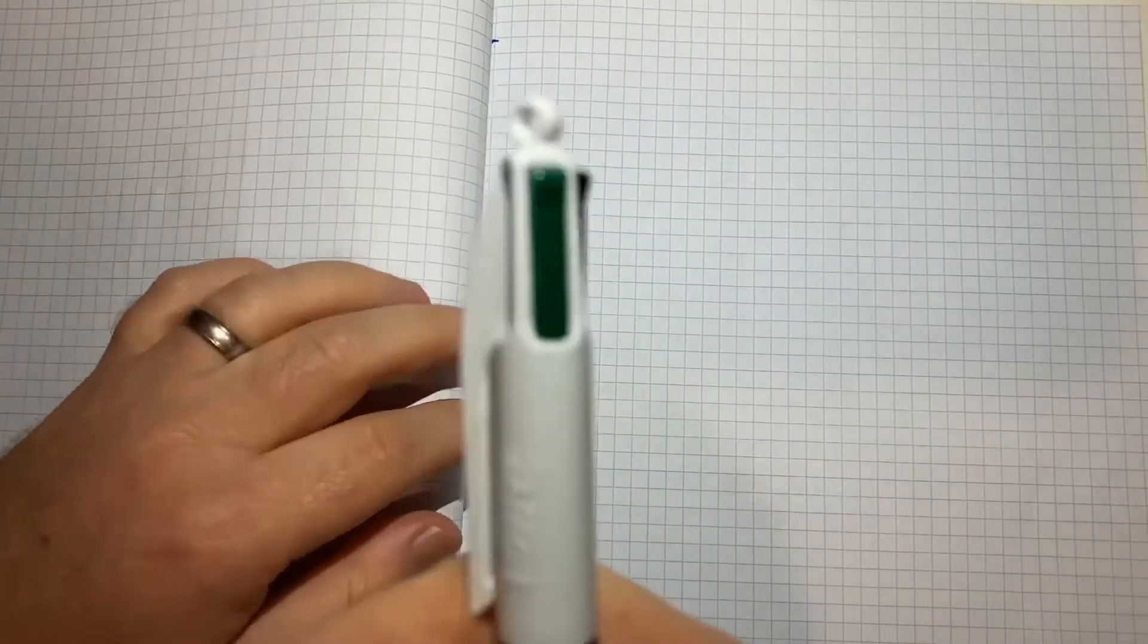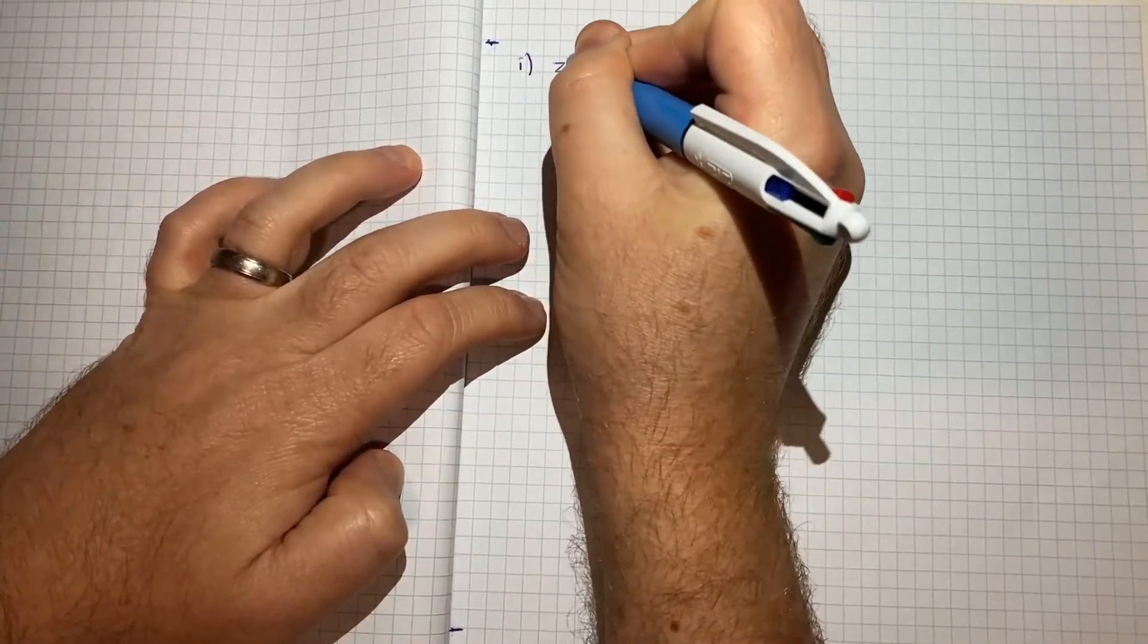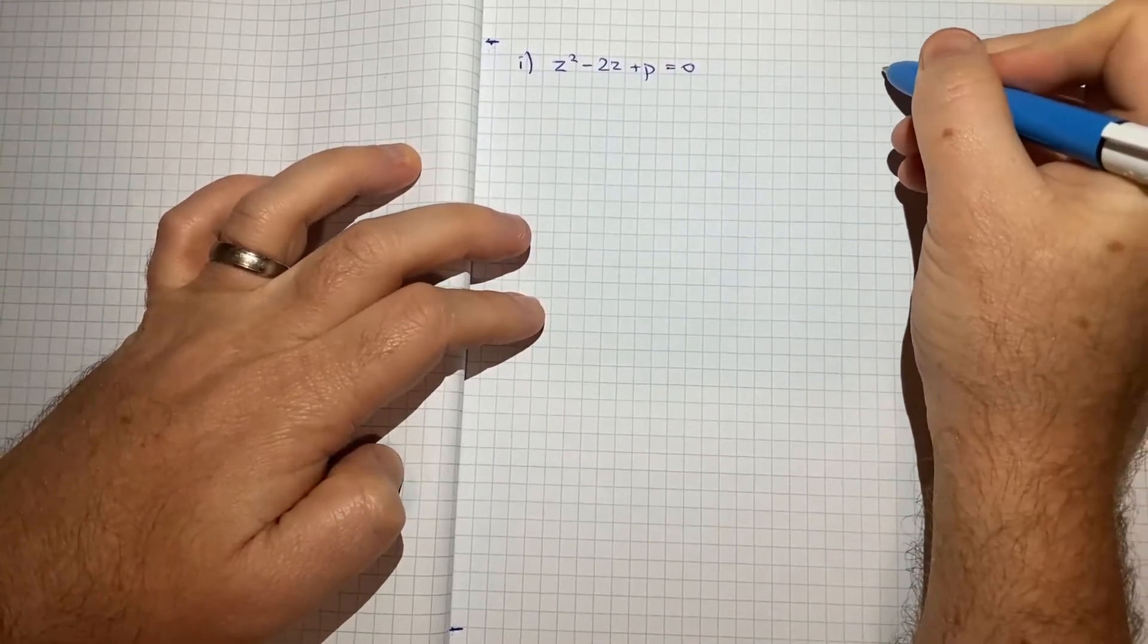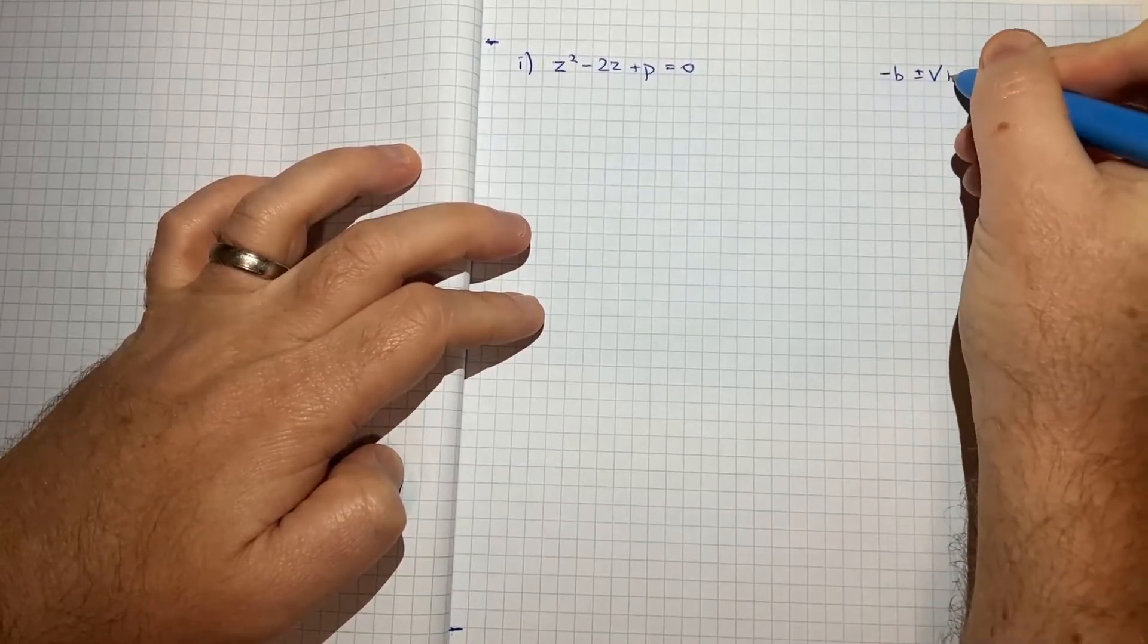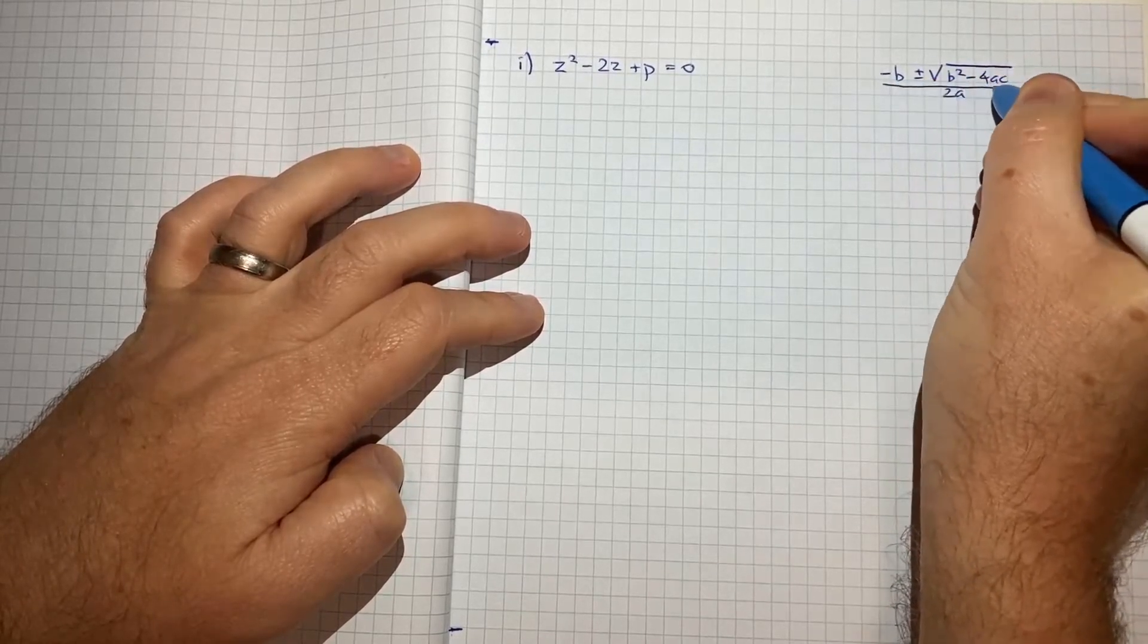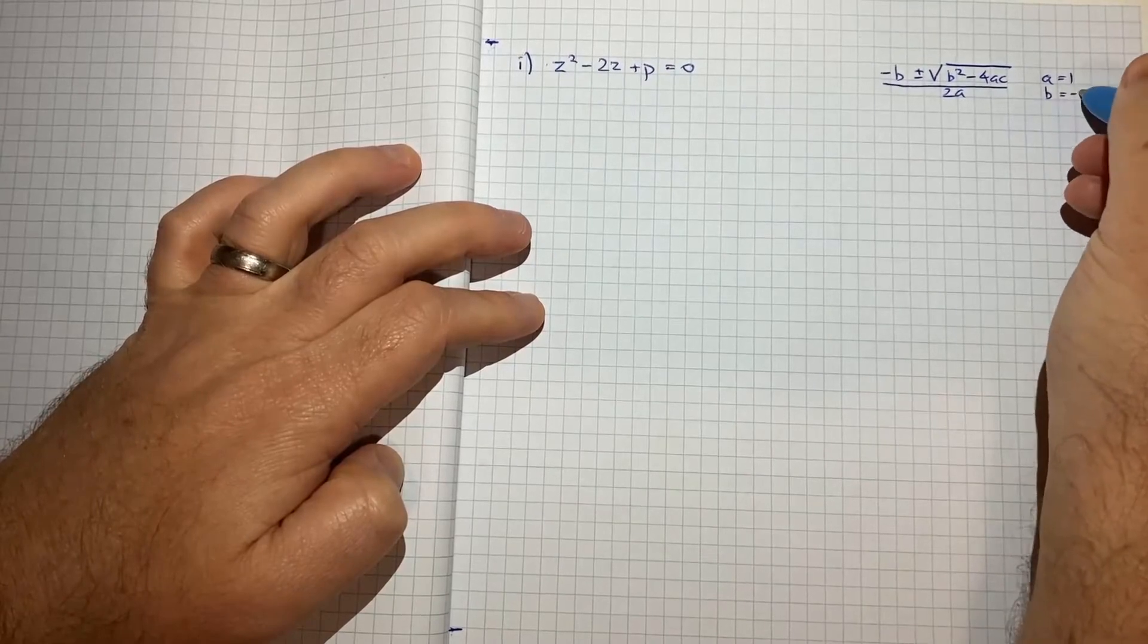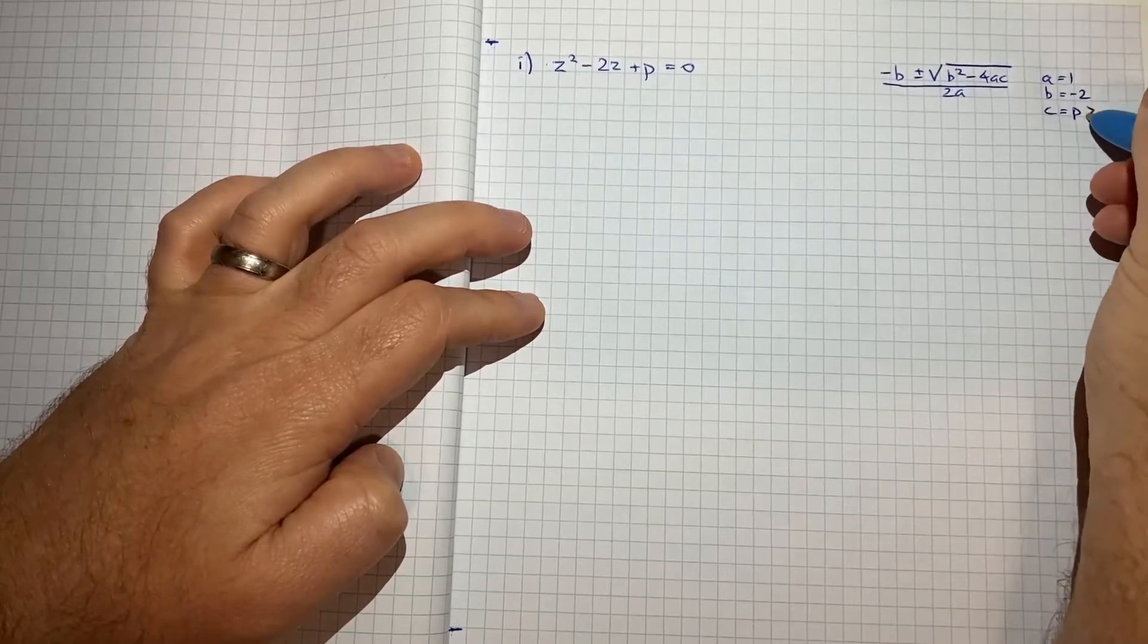So if I just jump in and we start with part 1 here. So we've got our equation z squared minus 2z plus p is equal to 0. We use our quadratic formula. So we know the roots of these will be negative b plus or minus root b squared minus 4ac on 2a. That's the generic way to write the quadratic formula. In our case we're dealing with a of 1, b of negative 2, and then c is equal to p, which is our number that we know is greater than 1.